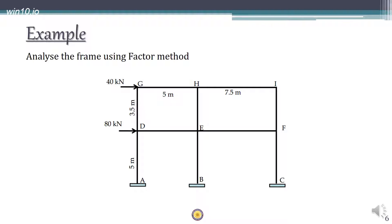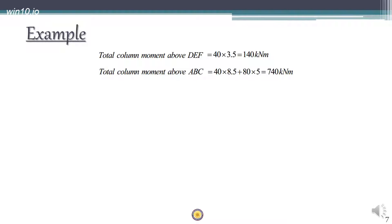Now let's see an example. We are given a frame with two stories and two bays. There are two loads acting. For the top story, the total moment mt comes only from the top load: 40 × 3.5. For the bottom story, the moment comes from both the 40 kN and 80 kN forces: mt = 40 × 8.5 + 80 × 5. These are the mt values for the different stories.